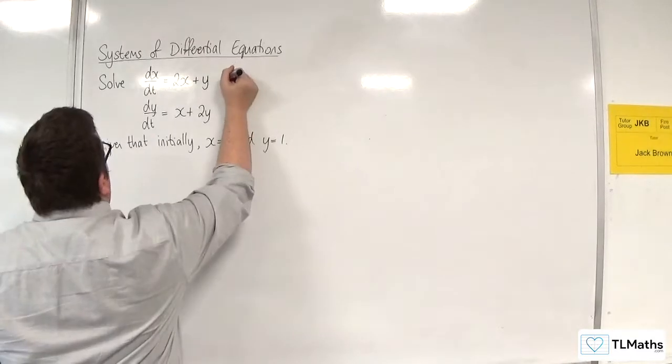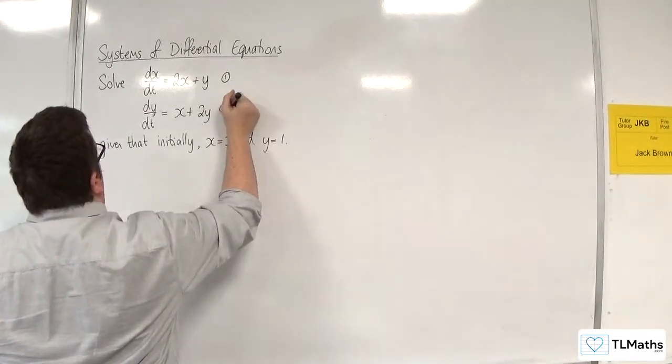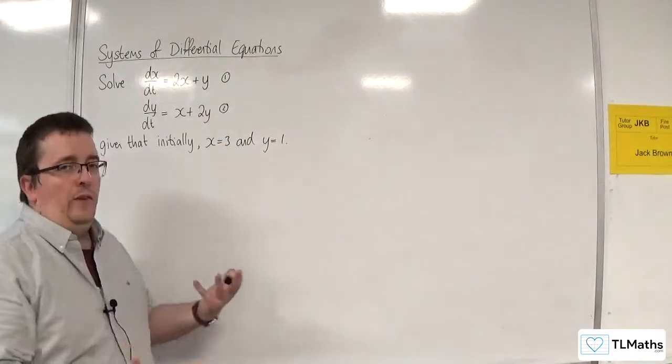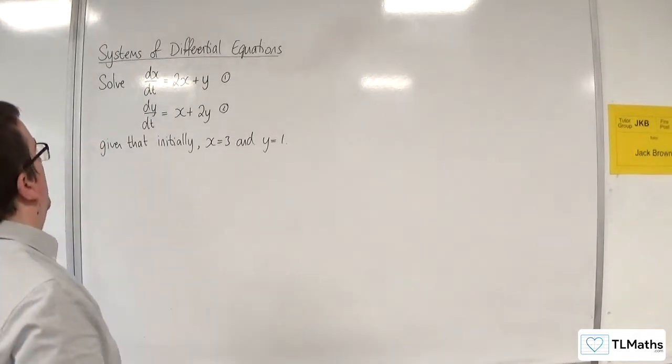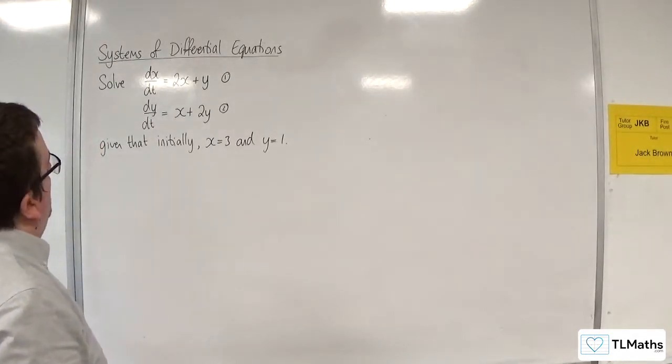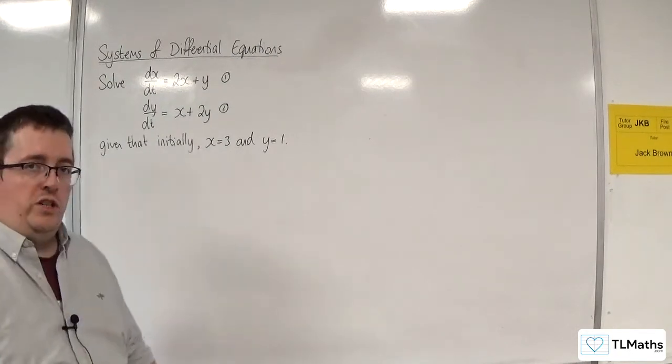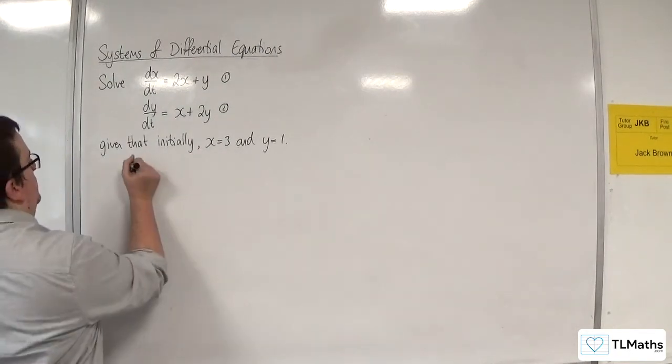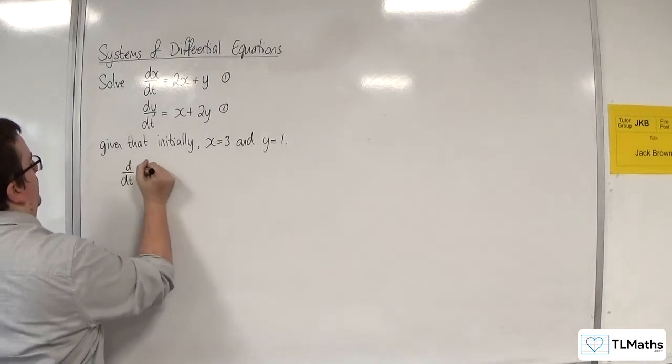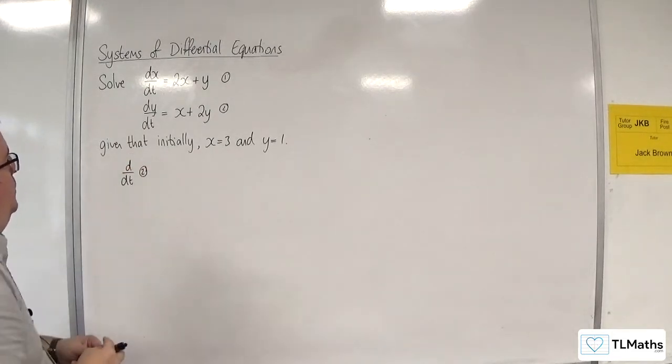First thing I'm going to do is label the two equations 1 and 2. Makes it easier for me to track what's going on. So I am going to choose to work with equation 2. I'm going to differentiate equation 2 with respect to t.